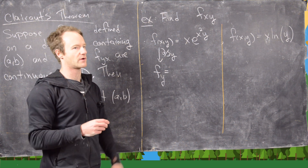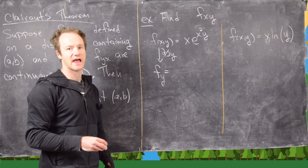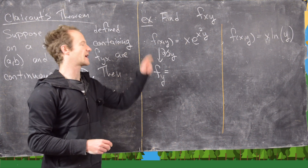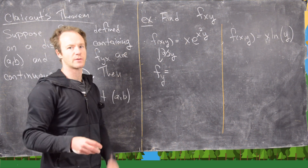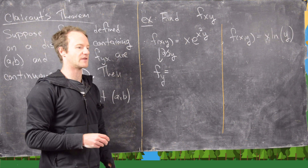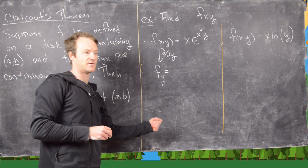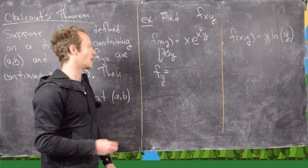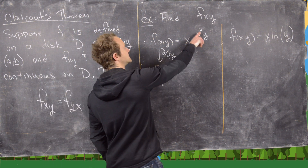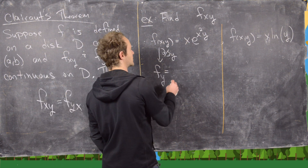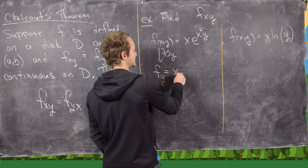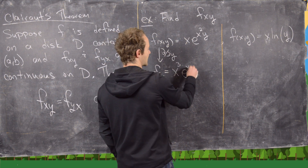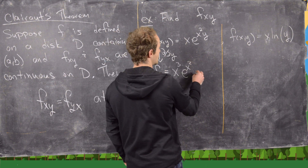We know the derivative of e^(kx) is k times e^(kx) where k is a constant — it's just that here we have variables we're treating as constants and some we're not. So x² comes down and gives us x³ · e^(x²y).